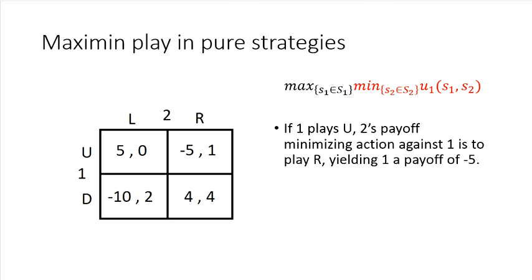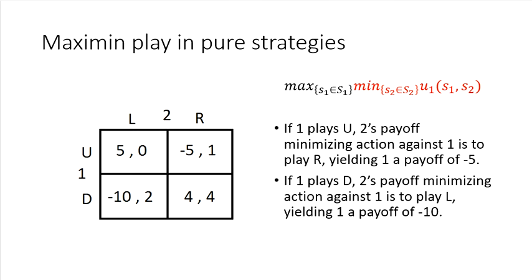Likewise, if instead player one chose Down, then he's inducing either a payoff of negative ten or four, implying that player two's payoff-minimizing action against player one is now to choose L, because this would induce a payoff of negative ten. So this is the solution to the inside optimization problem.